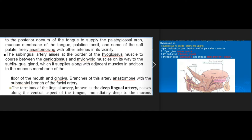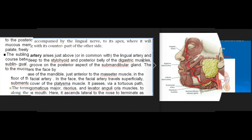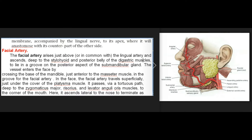The terminus of the lingual artery, known as the deep lingual artery, passes along the ventral aspect of the tongue immediately deep to the mucous membrane, accompanied by the lingual nerve, to its apex where it anastomoses with its counterpart of the other side.